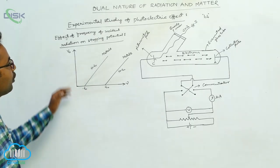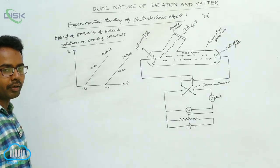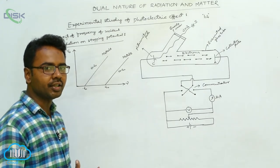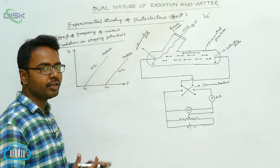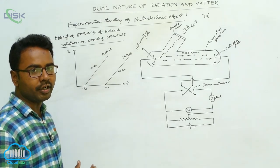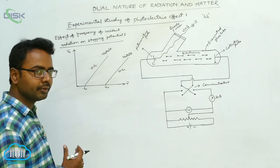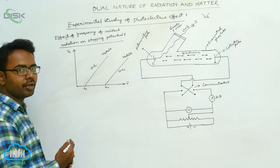Here we study the effect of frequency of incident radiation on the stopping potential — how the stopping potential changes with the change in frequency of incident radiation. This can be studied using this graph. From the graph it is clear that as we increase the frequency of incident radiation, the stopping potential is increasing linearly.